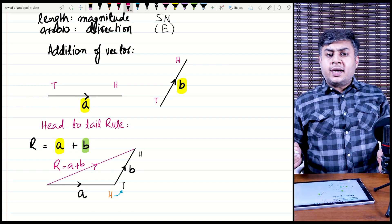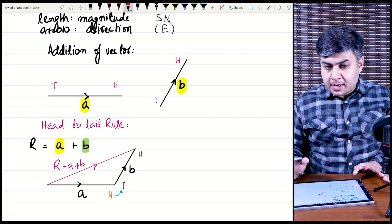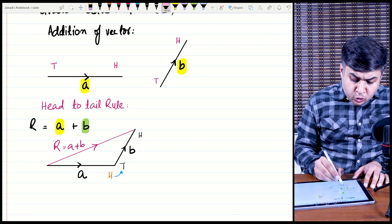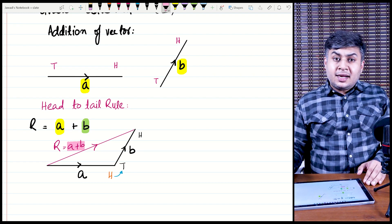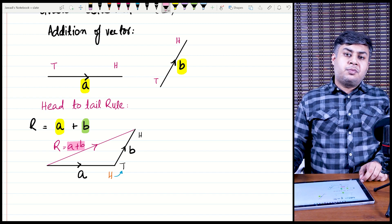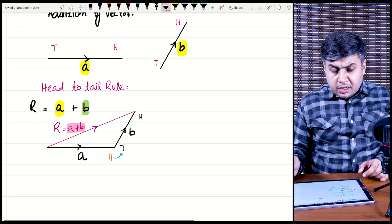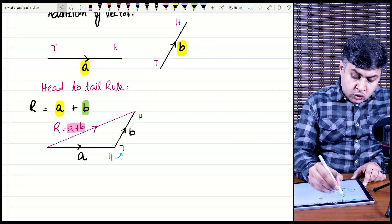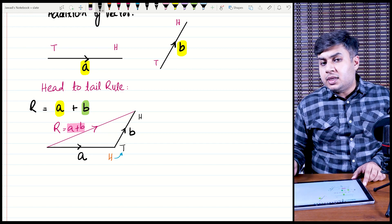You can solve two vectors using the parallelogram method as well, but it is preferred to learn the head-to-tail method. There are other methods such as resolution of vectors, which will be covered later. Using the head-to-tail rule, you can add three, four, or five vectors in the same way.